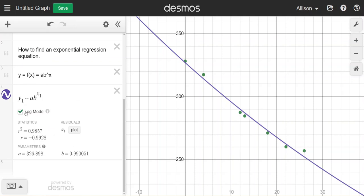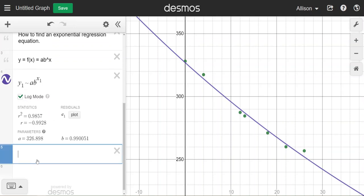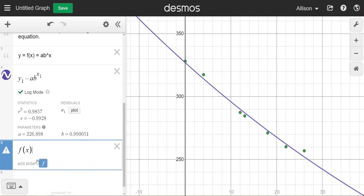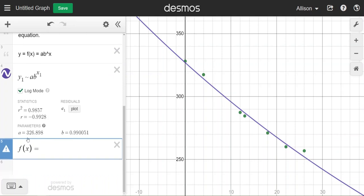So let me do that and then we can write the function. And so our function f of x is going to be equal to my parameter for a is 326.898 times b which is 0.990 to the x.